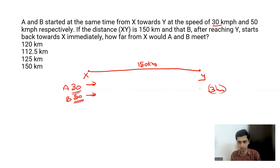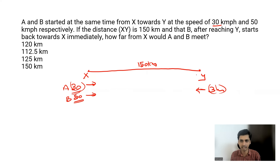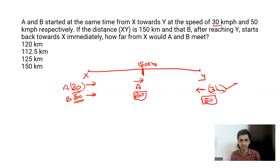In those 3 hours, B reaches Y and turns back. Meanwhile, A at 30 km/h covers 90 km in 3 hours. So A is 90 km from X, and B is at Y (150 km from X). The remaining gap between them is 150−90 = 60 km. Now they move towards each other.